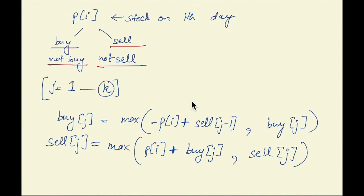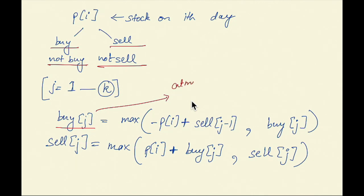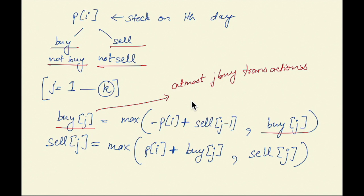Since we are allowed a maximum of K transactions, at every transaction J we will decide whether we have to make the Jth transaction on day I or not. If we don't make the Jth transaction on day I, we simply don't buy the stock on day I, and the maximum profit by doing at most J buy transactions would be the same as if we had done the Jth transaction earlier than day I.